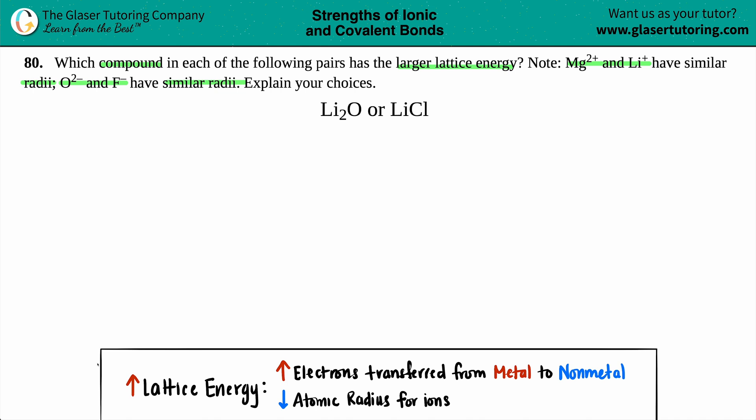Now just know that when it comes down to lattice energy—basically the amount of energy that's needed to break this ionic compound into the ions—there's only two things that really matter in terms of either raising your energy or lowering it. That has to do with the atomic radii of the ions in the ionic compound, and it also has to do with the electrons that are transferred.